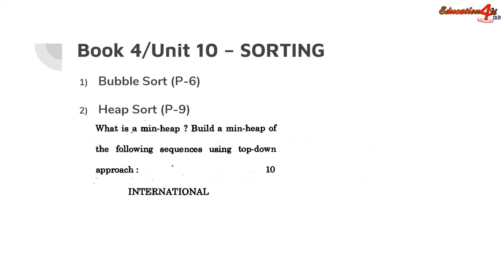Book 4, Unit 10 is sorting — also a very important chapter. You should know all four types of sorting. Important topics highlighted are bubble sort on page number 6 and heap sort on page number 9. A question may ask you to explain bubble sort or heap sort. Also, you may be asked to build a min heap of a given sequence using the top-down approach.